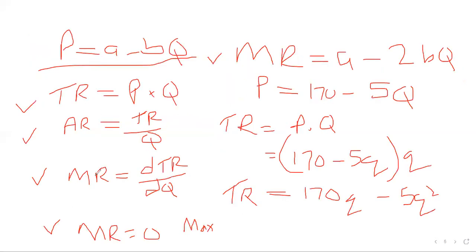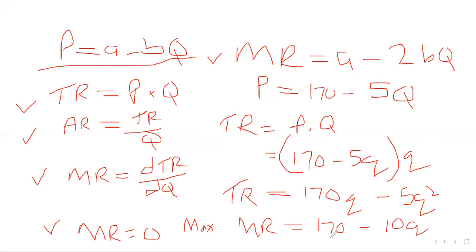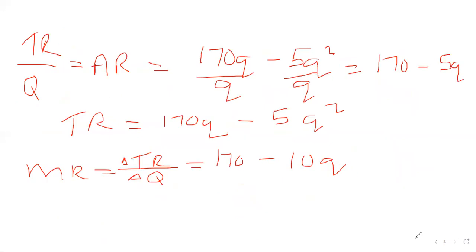So marginal revenue is simply differentiating total revenue. The marginal revenue is going to be the derivative of total revenue against quantity. We found our total revenue: 170Q minus 5Q squared. So the marginal revenue will be 170 minus 10Q. This is 170 and this is 10Q.